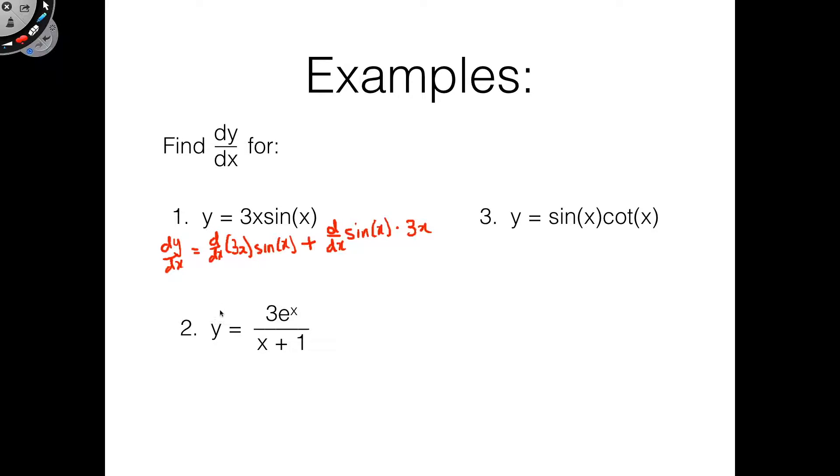Now it's just two pretty easy pieces. The derivative of 3x is 3, so that would be 3sin(x) plus the derivative of sin(x) is cos(x). So this would just be 3x cos(x). And there you are, that's our answer.